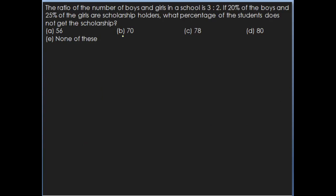The next question: the ratio of the number of boys and girls in a school is 3 is to 2. If 20% of the boys and 25% of the girls are scholarship holders, what percentage of the students does not get the scholarship? The ratio of boys and girls is 3 is to 2. Let us assume there are 300 boys and 200 girls.